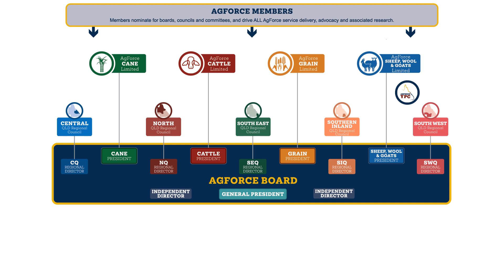All these boards and councils meet regularly and work across the full range of issues that have faced the industry. Every two years there is an AgForce election. This year, 2024, is an election year for AgForce. All these positions will be vacated and members can nominate themselves to serve on the AgForce board, the commodity boards, the young producers council and the regional councils. All voting members can nominate, and for contested positions we run elections — over 80 positions are filled.